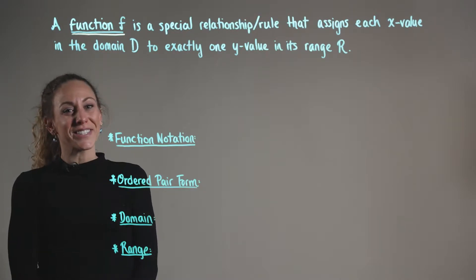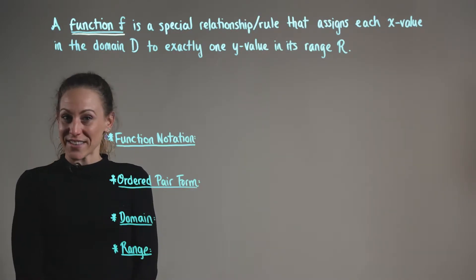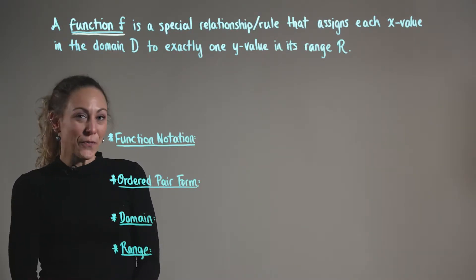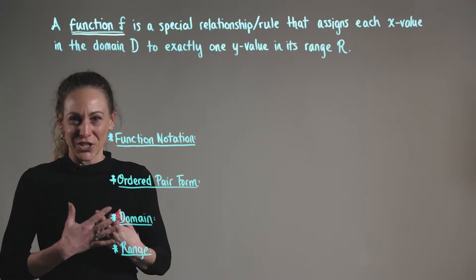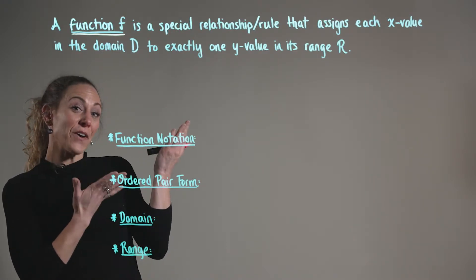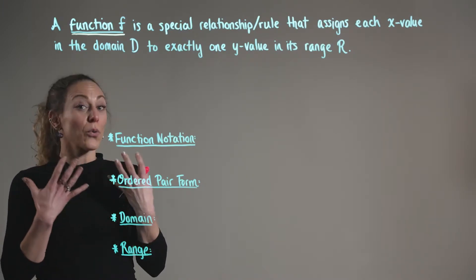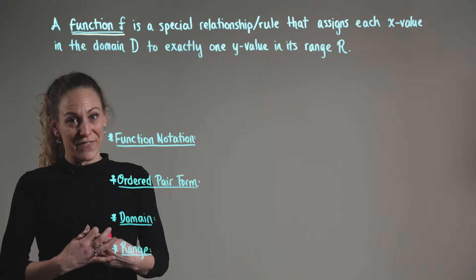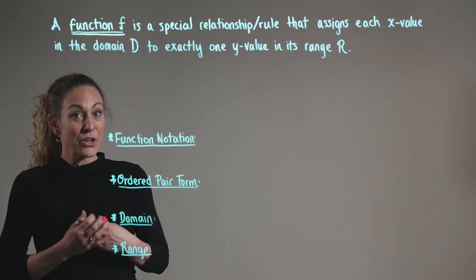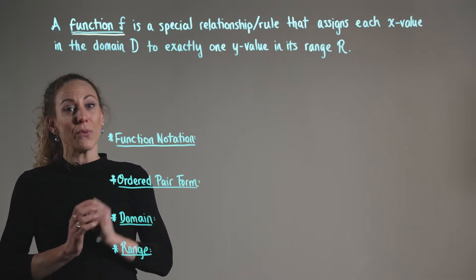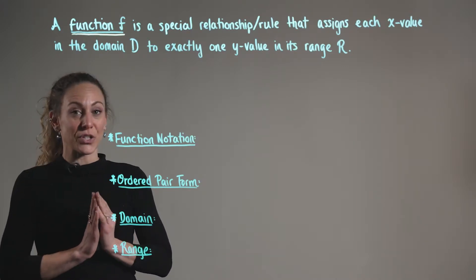Here we're going to begin our discussion of functions and their graphs. First, the definition of a function: we say that a function f is a special relationship or rule that assigns each x-value in its domain to exactly one y-value in that function's range.